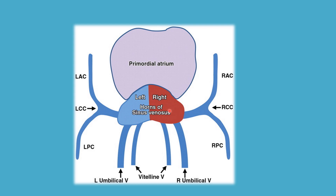Each horn receives a common cardinal vein. The common cardinal vein is formed by the union of the anterior cardinal vein and posterior cardinal vein. The right common cardinal vein is formed by the union of the right anterior cardinal vein and right posterior cardinal vein, and the left common cardinal vein is formed by the union of the left anterior cardinal vein and left posterior cardinal vein.